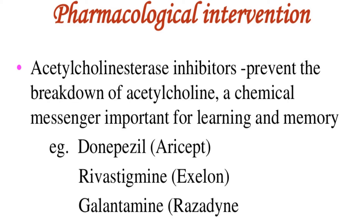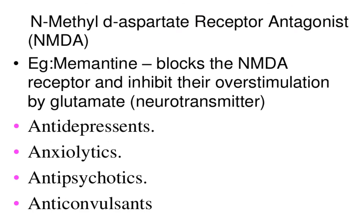For pharmacological intervention in Alzheimer's disease, acetylcholinesterase inhibitors prevent the breakdown of acetylcholine, a chemical messenger important for learning and memory — for example donepezil, rivastigmine, and galantamine. Memantine blocks the NMDA receptor and inhibits overstimulation by glutamate. Antidepressants, anxiolytics, antipsychotics, and anticonvulsants can also be used in some cases to reduce mood symptoms.